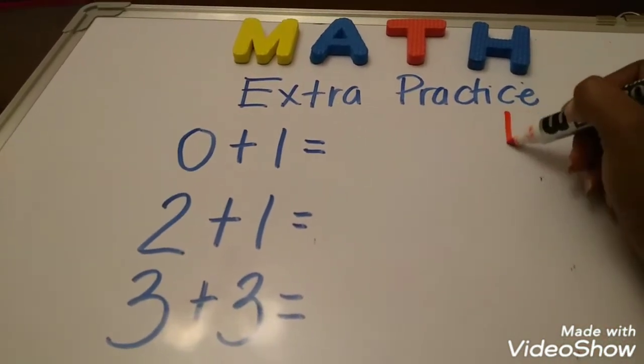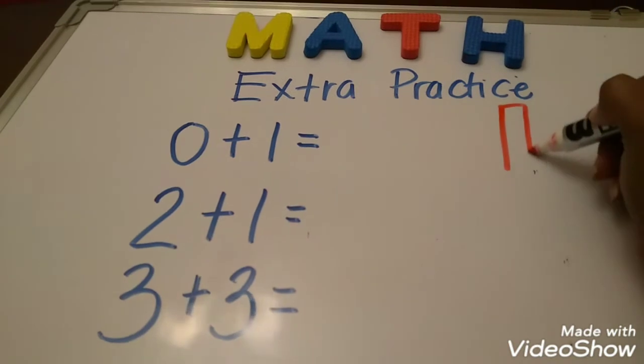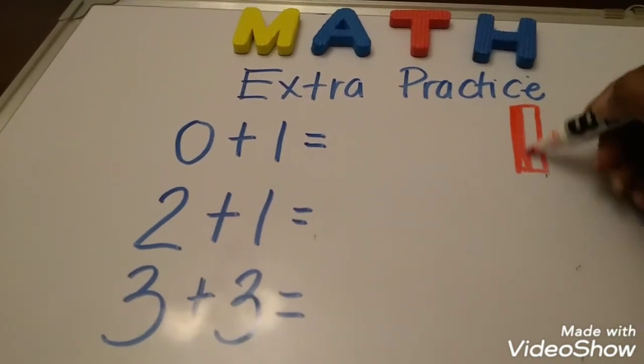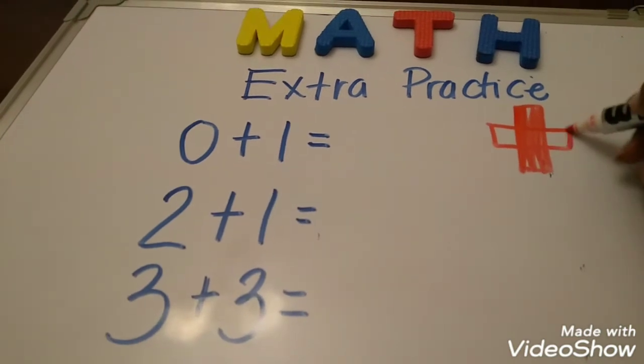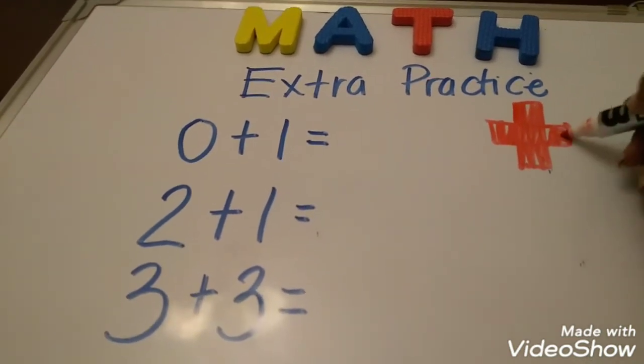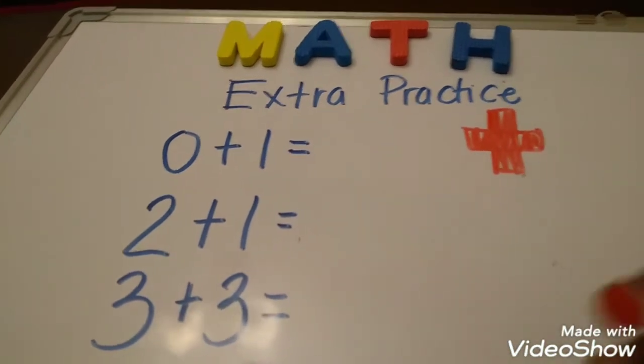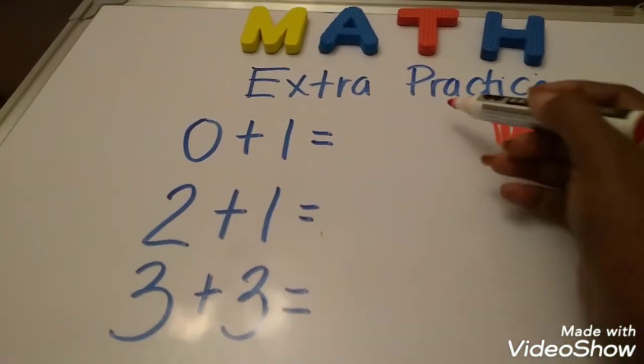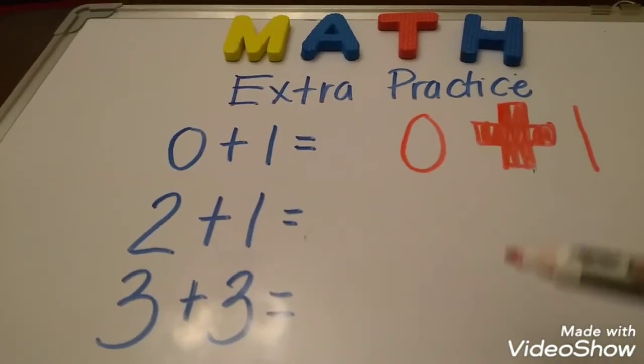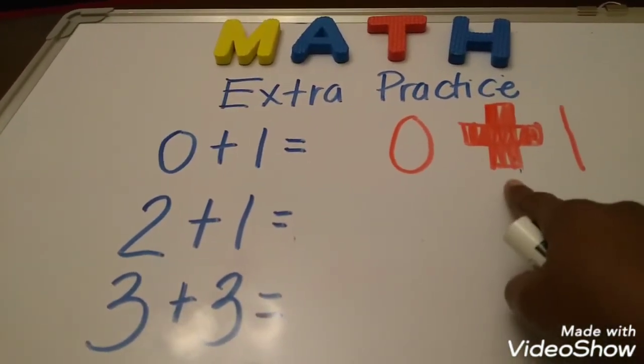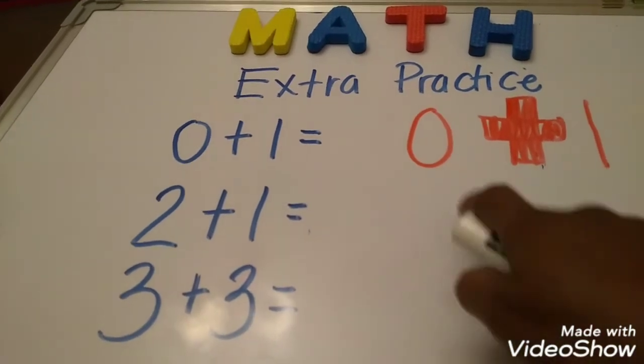Addition, when you see addition, you will see something that looks like this. When you see this sign in between two numbers, let's say we have a zero and a one, this means that we're going to add these two numbers together.